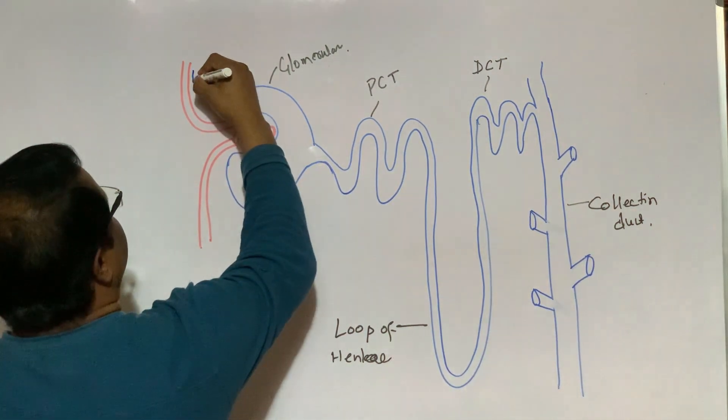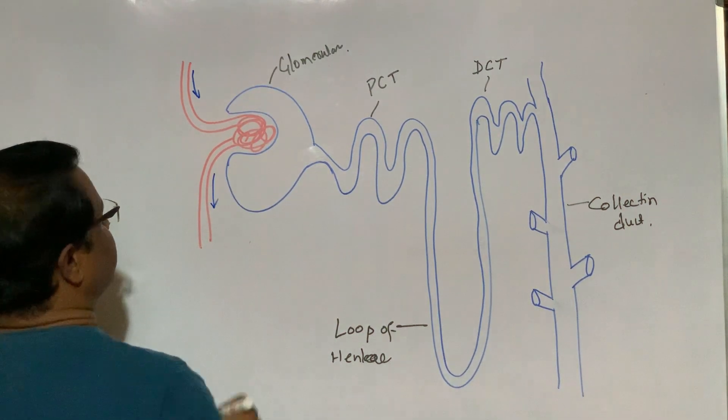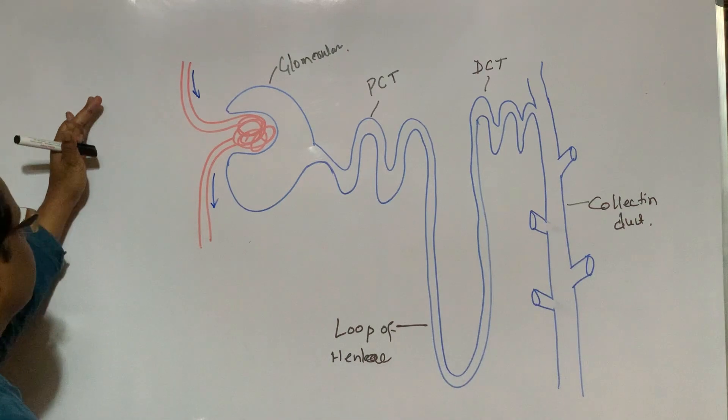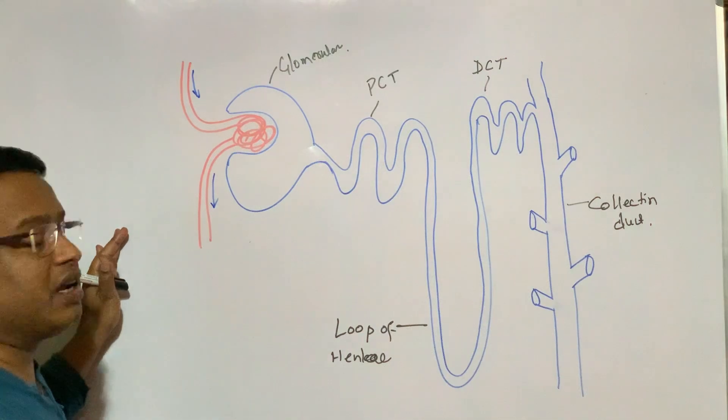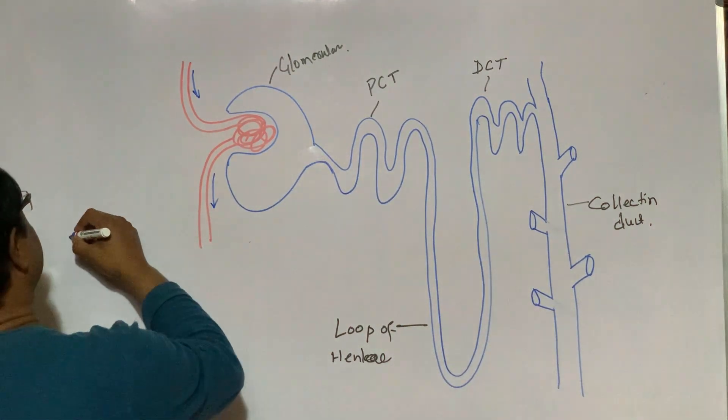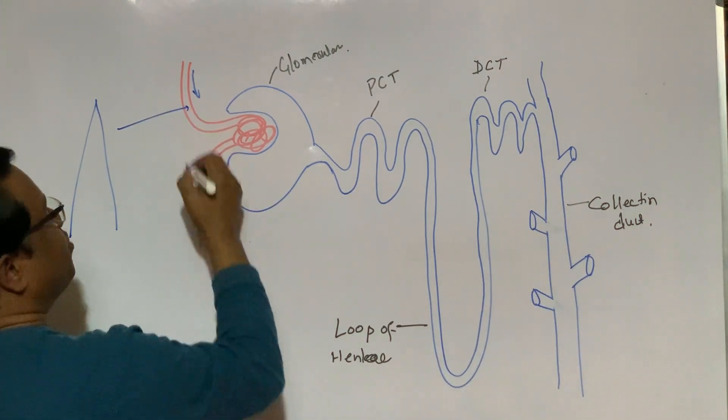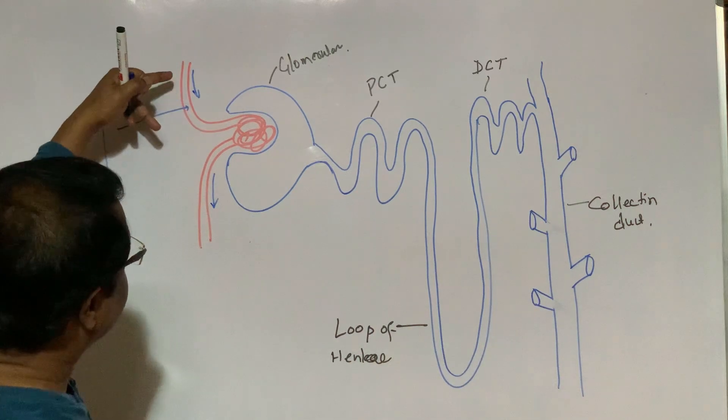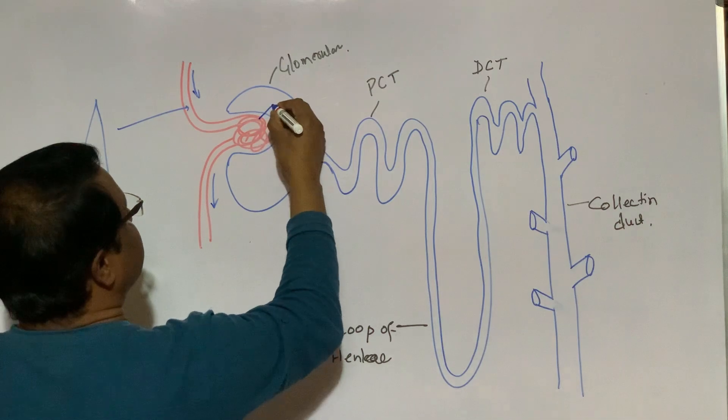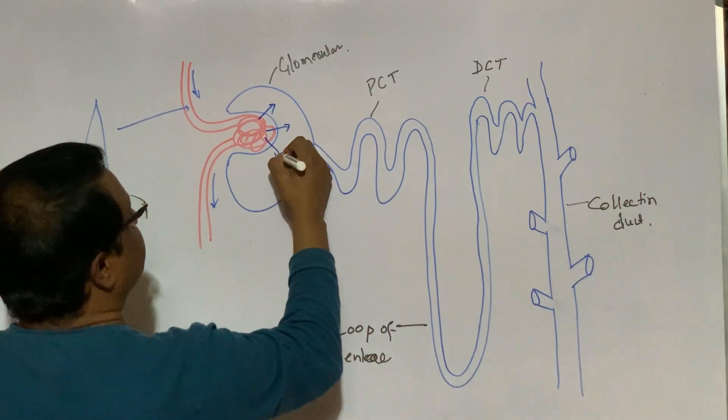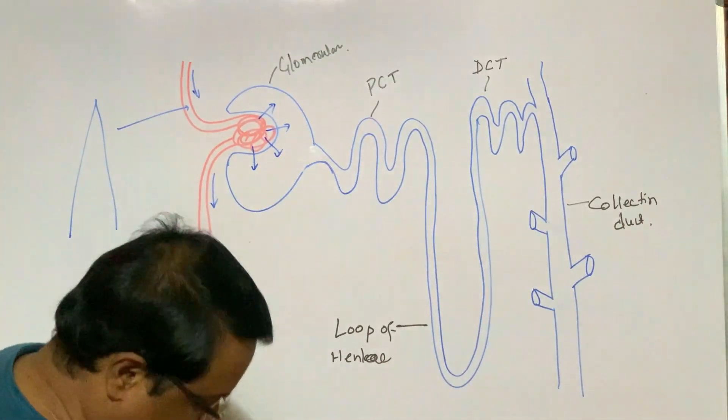That is afferent artery, that is efferent artery. If we take any sugary food or a high sugary food, our blood glucose spikes like that, spikes and glucose enters into bloodstream. When blood enters into glomerulus, all the sugar content is filtered out from glomerulus.